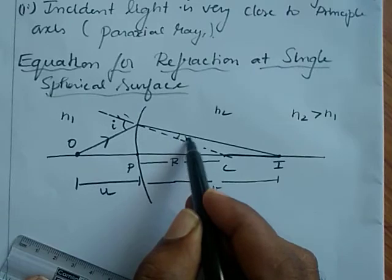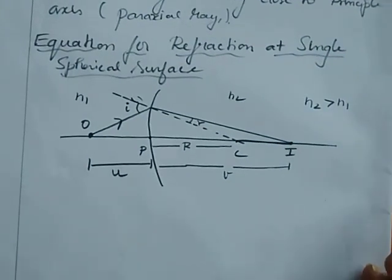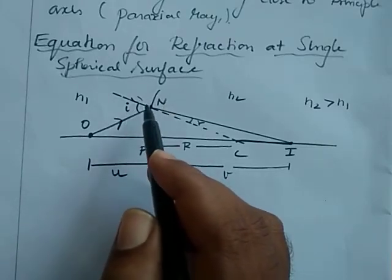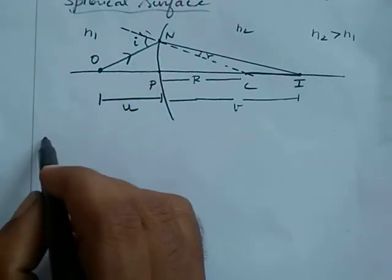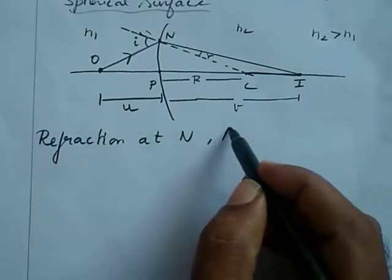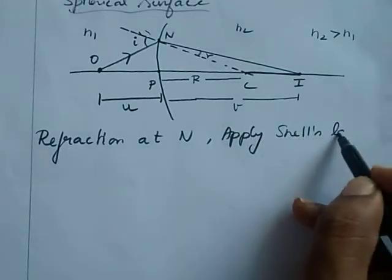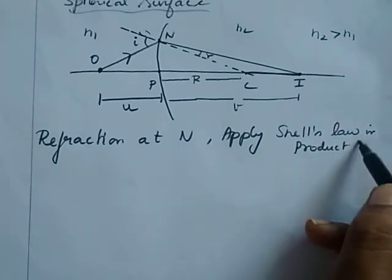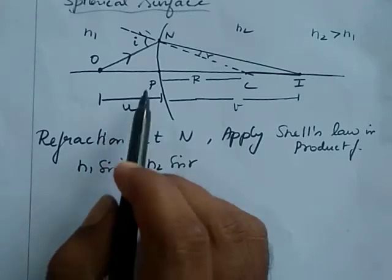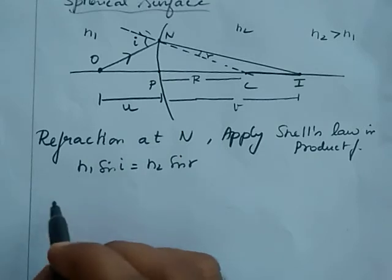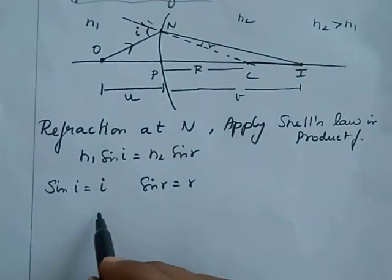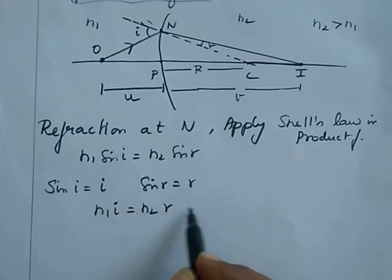Here it is the angle of incidence and the angle of refraction. There is a refraction at the point N. So I am applying Snell's law in product form at the point N: N1 sin I = N2 sin R. Here the angle of incidence and angle of refraction are very small, so sin I ≈ I and sin R ≈ R. The equation becomes N1·I = N2·R — consider this as equation 1.